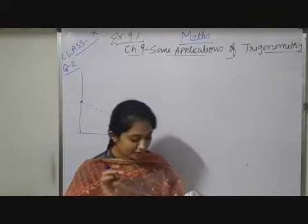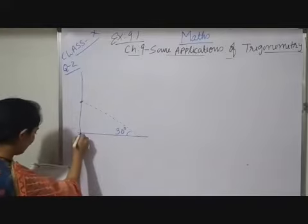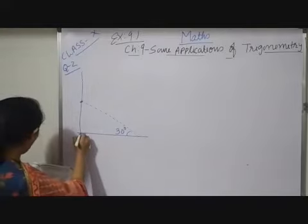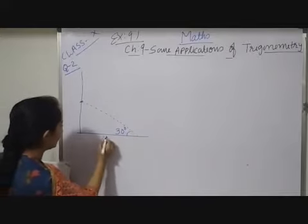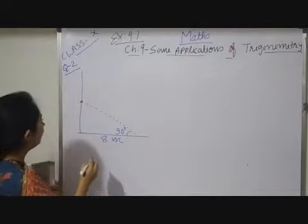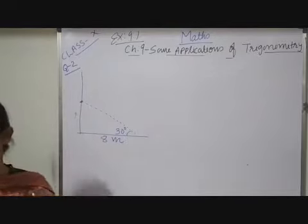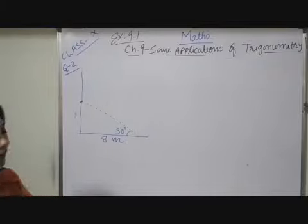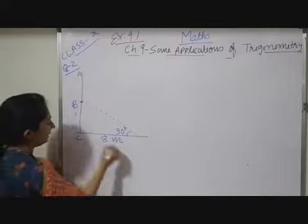Next it is given the distance between the foot of the tree, foot of the tree means from here to the point where the top touches the ground. This distance is given to you, that is 8 meters. Find the height of the tree. This whole height of the tree you have to find out. Let me give a name to this figure: A, B, C, D.